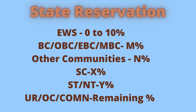Some states do not provide EWS reservation under state quota. In general, OBC reservation is subdivided in many states — such as Backward Class, Extreme Backward Class, Most Backward Class, Category 1, 2A, 2B, 3A and 3B in Karnataka, and Category A to E in case of Andhra Pradesh and Telangana, and so on.